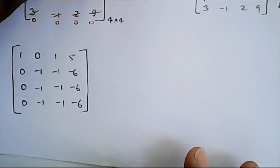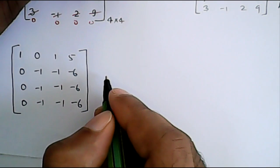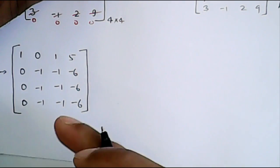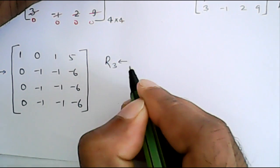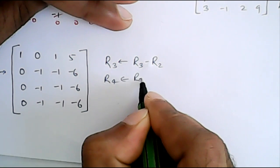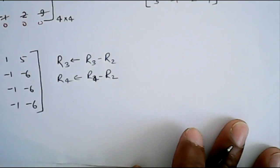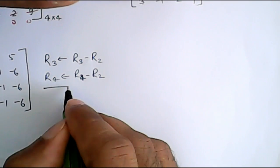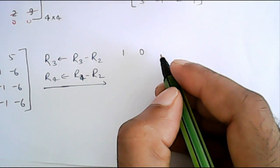If you see carefully, Rows 2, 3, and 4 are all equal. So with a simple elementary operation, we replace R3 by R3 − R2 and similarly eliminate R4. Now what will be the result?